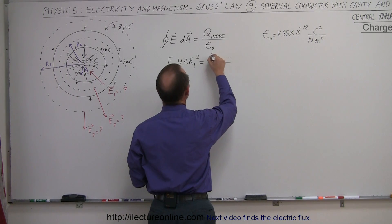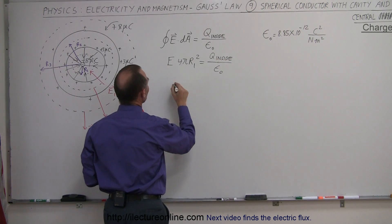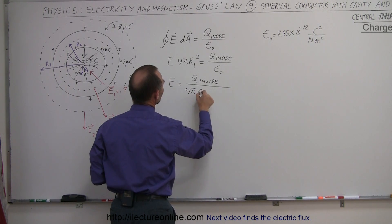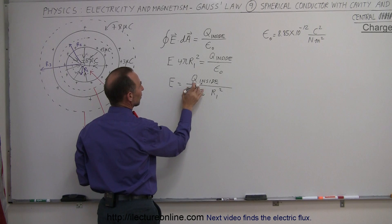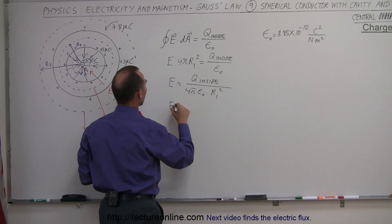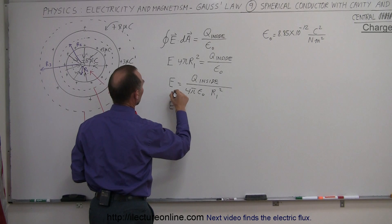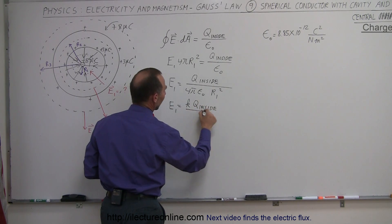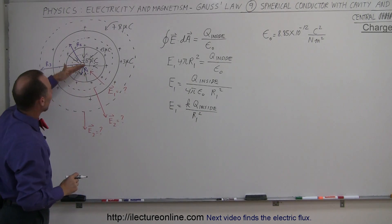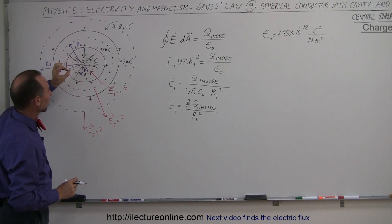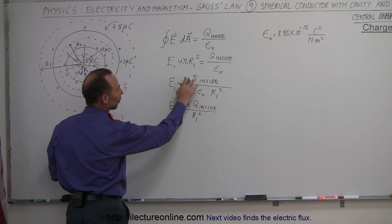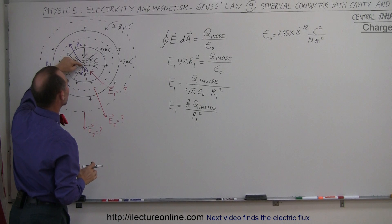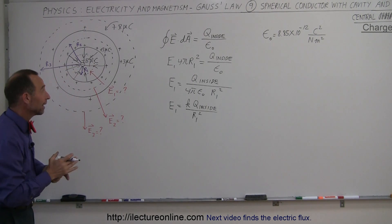In general terms: the strength of the electric field E1 inside the cavity equals K times Q inside divided by R1 squared. Depending upon the size of R1, the field strength diminishes as we go further from the inside charge. Q inside is the minus 5 microcoulombs, and R1 is simply the distance from the center to wherever we want to find the field strength.